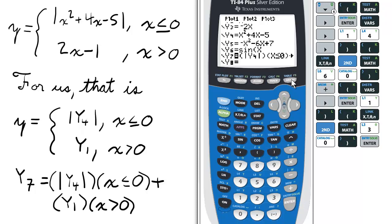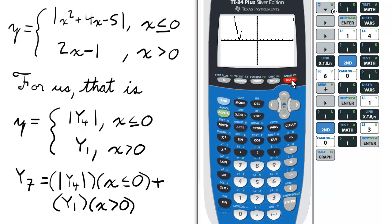As y7 is the only one selected, this will be my graph. Notice the x squared plus 4x minus 5 bounces as it hits the x-axis because it's an absolute value. And if you need to, you can go to the table to see the x and y values defined for the piecewise function.